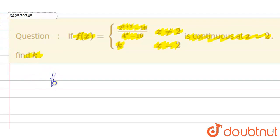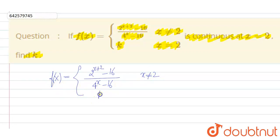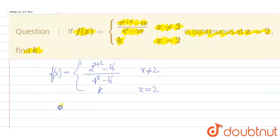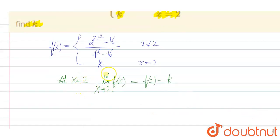We have f of x equal to 2 raised to power x plus 2 minus 16, divided by 4 raised to power x minus 16, when x is not equal to 2, and f of x equal to k when x is equal to 2. It is given that the function is continuous at x equal to 2. So, we can say that the limit as x approaches 2 of f of x should be equal to f of 2, and the value of f of 2 is k.